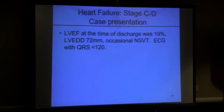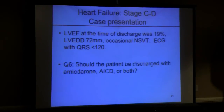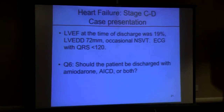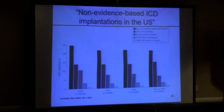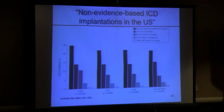At discharge, EF is 19%, LVDD 72%, a little NSVT but not a major concern, QRS is narrow — should he get an ICD? A 2011 JAMA paper showed that approximately 23 percent of ICD implantations in the U.S. were non-evidence-based, with the greatest rate being patients diagnosed with heart failure within the prior three months. You have to give medical therapy a chance to see if there's a reversal process before implanting.